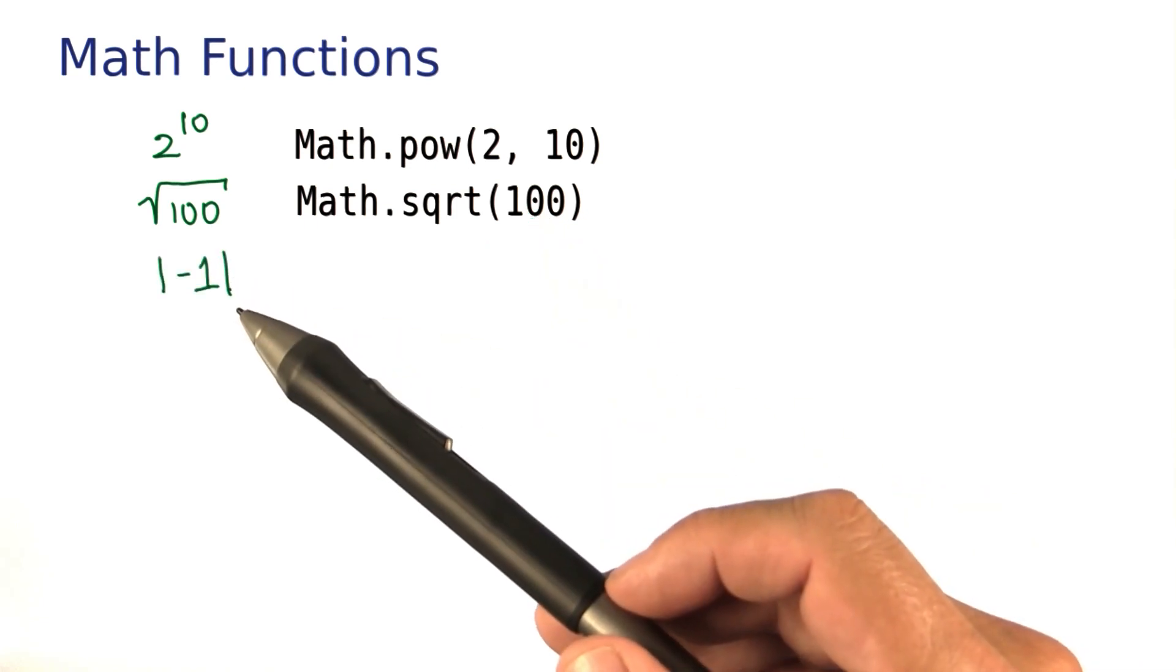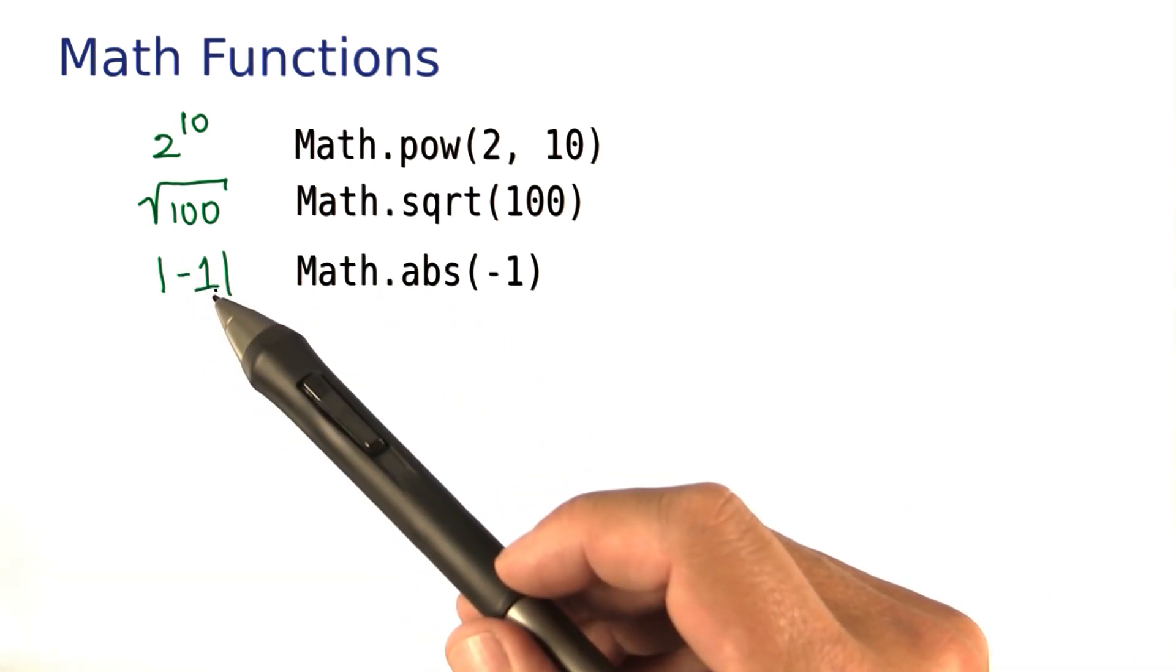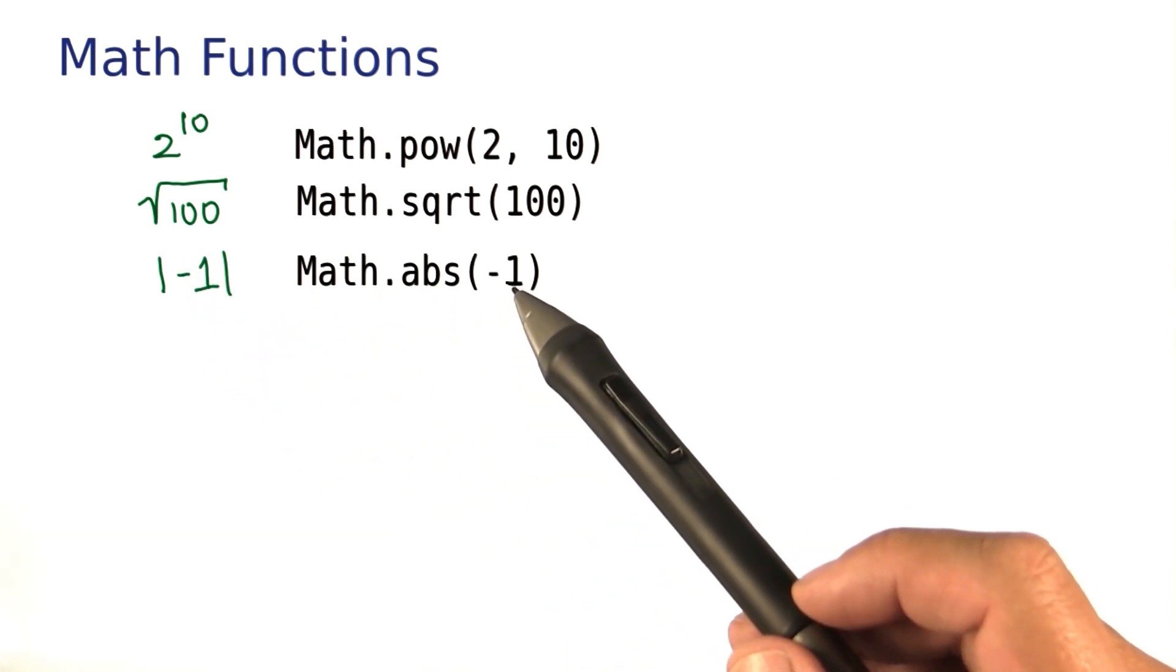For absolute values, there is another function. It's called abs, and whatever you put between the vertical bars in math notation goes inside here.